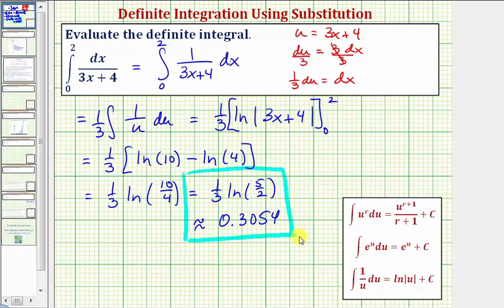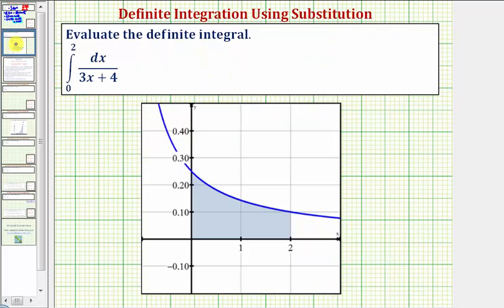And a couple more things I do want to mention here. Our integrand function f of x equals one divided by the quantity three x plus four is non-negative on the closed interval from zero to two, which is graphed here, and therefore this definite integral does give us the area under this curve and above the x axis on this closed interval.